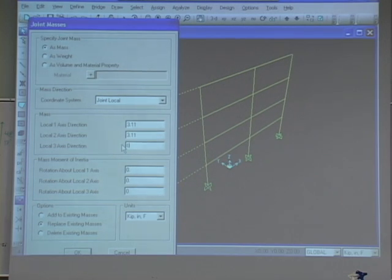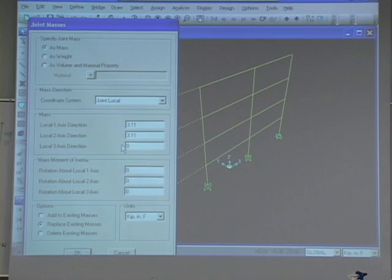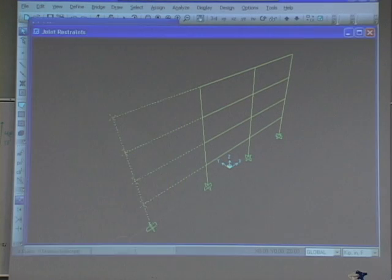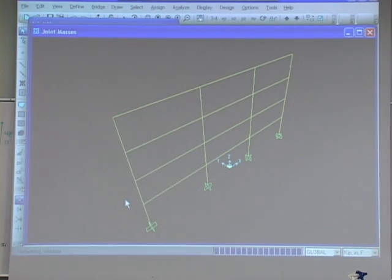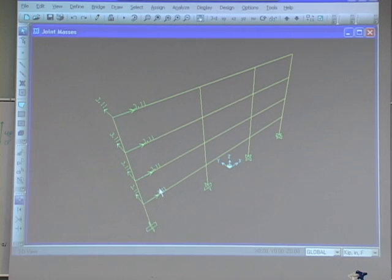Actually, maybe I changed my mind. I'm going to put zero for the third axis direction and not put vertical mass on there because that might cause some modes that are really high frequency and things like that, and I'll just avoid that because really we need lateral masses in this model. So we'll hit OK there and then it's going to show the masses. So it showed there that we applied 3.11 in both directions.